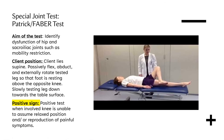One special test often used is the Patrick FABER test. The aim is to identify dysfunction of the hip and sacroiliac joints, such as mobility restriction. The client lies supine and the hip is passively flexed, abducted, and externally rotated so that the foot rests above the opposite knee. A positive sign is when the knee is unable to assume the relaxed position and/or there is reproduction of painful symptoms.